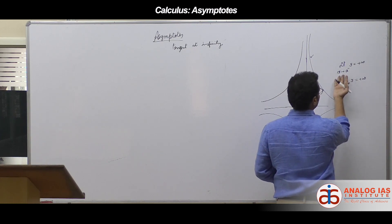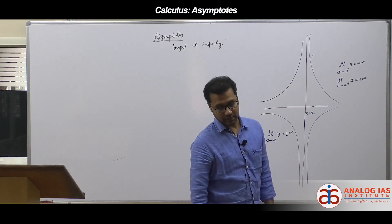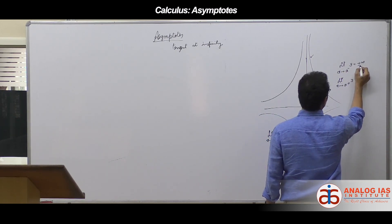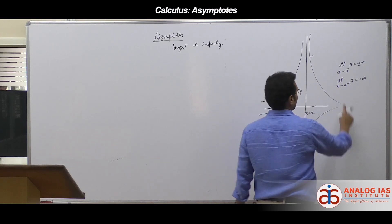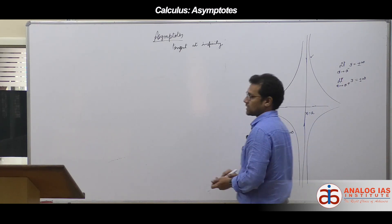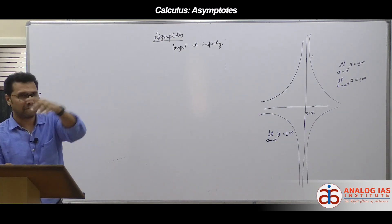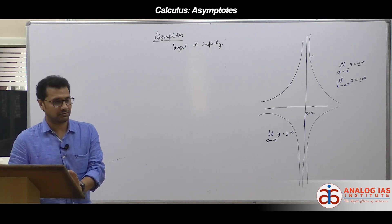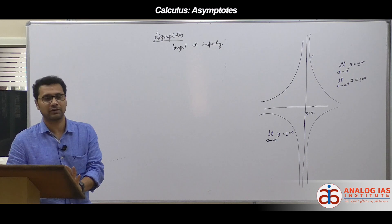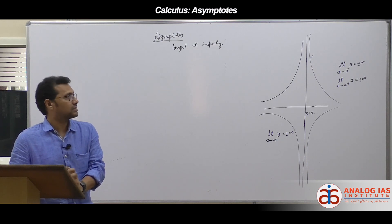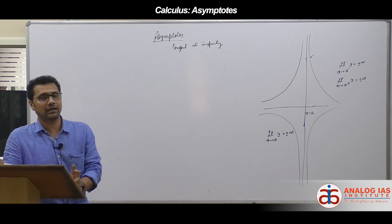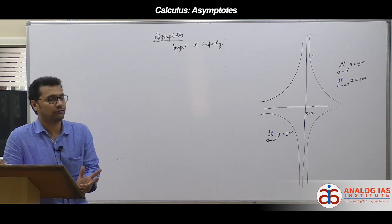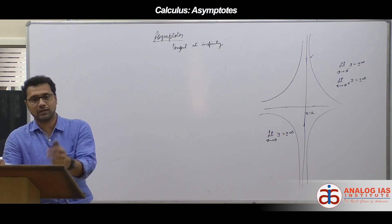x = a is a vertical asymptote if limit x tends to a⁻ gives y equal to plus or minus infinity, and limit x tends to a⁺ gives y equal to plus or minus infinity. Don't worry about whether it's plus or minus infinity, since you are not tracing the curve in the examination. Just think: as limit x tends to a, is y going to infinity? Or for what values of x is y going to infinity? If you check that, you will get vertical asymptotes.